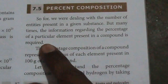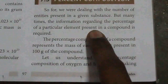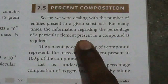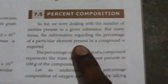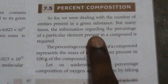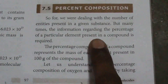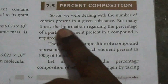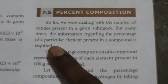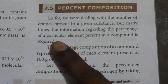In this lesson flow, I am going to talk about entities called molecules, atoms, and some other particles — specifically the number of atoms, molecules, and particles. Many times the information regarding the percentage of a particular element present in a compound is required, and in this element we have the number of atoms.